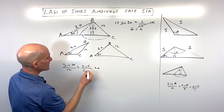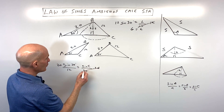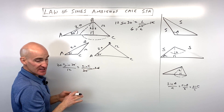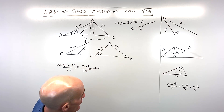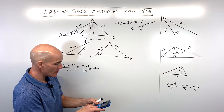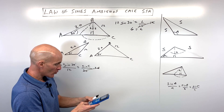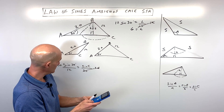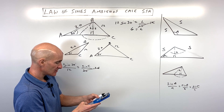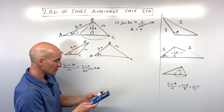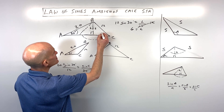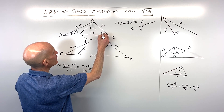Multiplying both sides by 20 gives us sine of C equals that quantity. Then we take the inverse sine to solve for angle C. On the calculator — make sure you're in degree mode — we compute 20 times sine of 30 divided by 12, then take the inverse sine. We get 56.4 degrees, rounded to the nearest tenth.